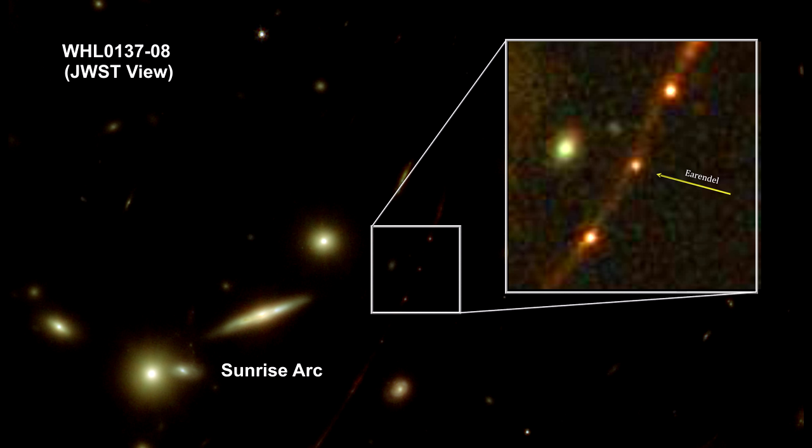Webb's analysis of the image has already confirmed that this is indeed a single star system, and not a group of several stars. The red dots on either side of Arendelle are a single mirrored star cluster.